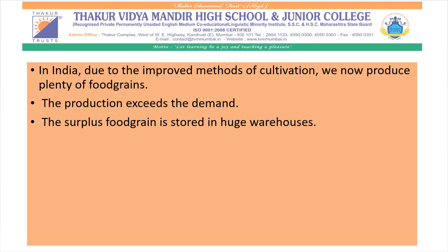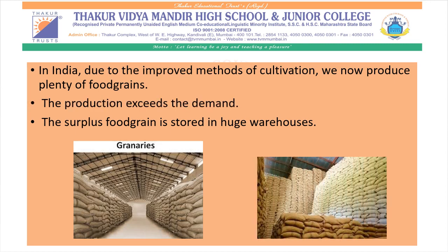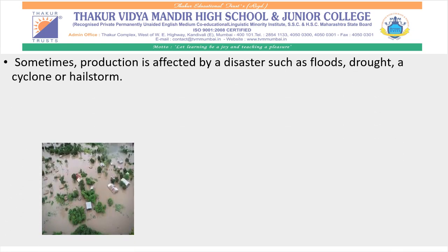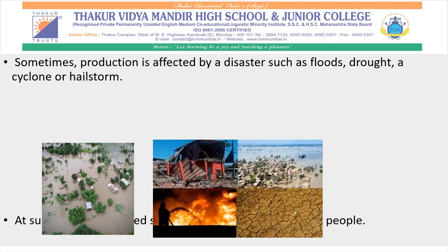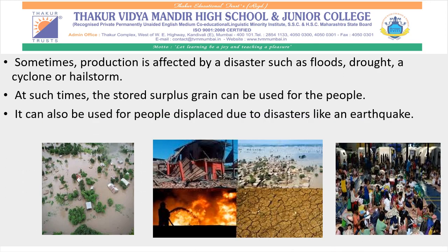During Part 1 of this lesson, we learned about improved methods of agriculture or cultivation. Due to this, we now produce plenty of food grains. As the population of our country is increasing, so is demand. Now the production exceeds the demand. The surplus food grains — meaning the amount of food grains left over when requirements have been met — are stored in huge warehouses. Sometimes production is affected by disasters such as floods, drought, cyclone, or hailstorm. At such times, the stored surplus grain can be used for the people, and also for people displaced due to disasters like an earthquake or floods.